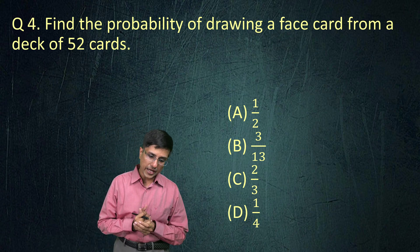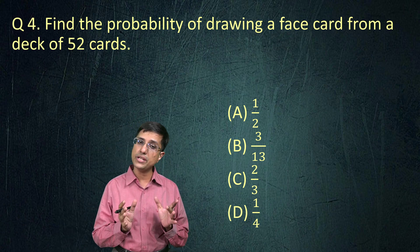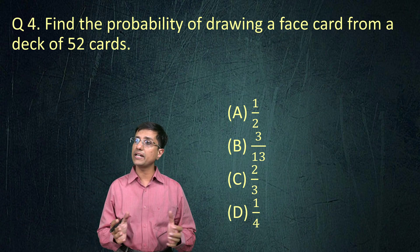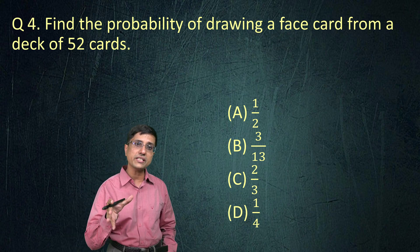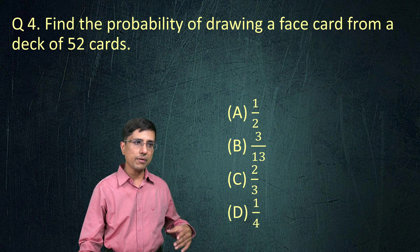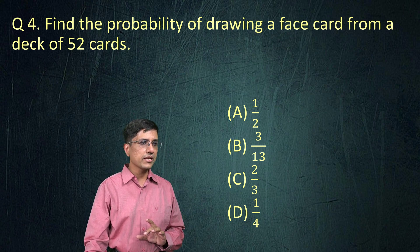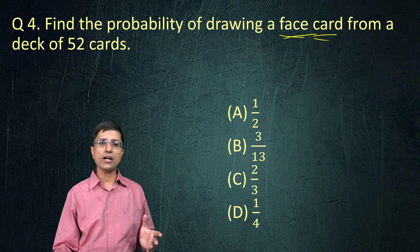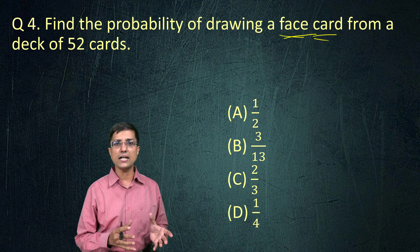This is a probability question. At this stage, most schools might not yet teach probability, but the concept itself is very simple. Let's look at it through this problem. What is the problem asking? If I draw a face card from a pack of cards — what is a face card? It is the king, queen and jack. Those cards are known as face cards or coat cards.